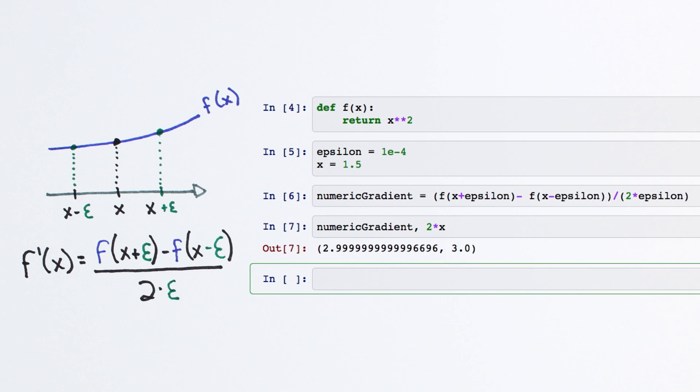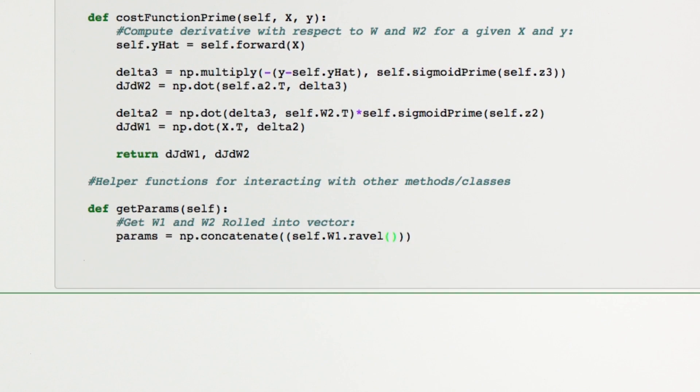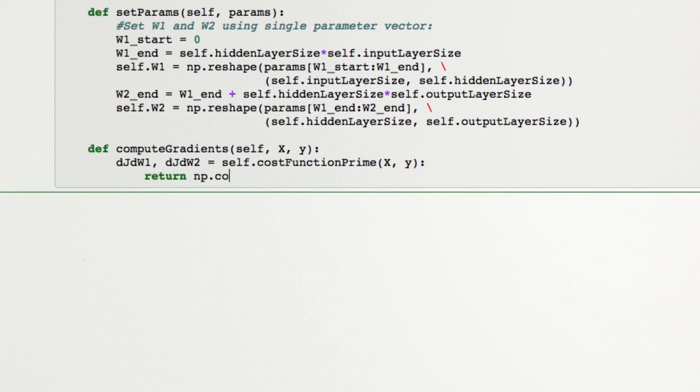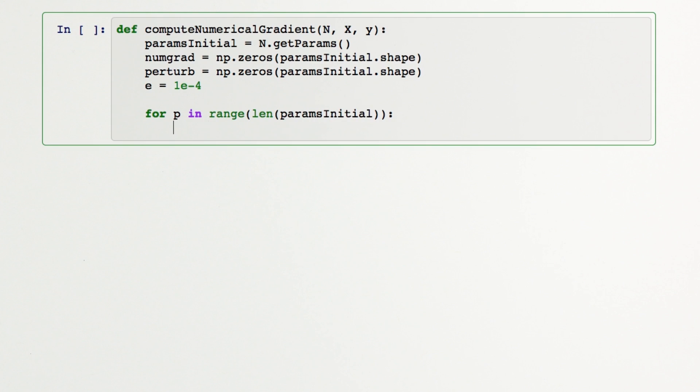We can use the same approach to numerically evaluate the gradient of our neural network. It's a little more complicated this time since we have 9 gradient values and we're interested in the gradient of our cost function. We'll make things simpler by testing one gradient at a time.